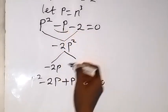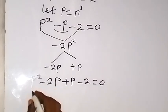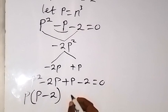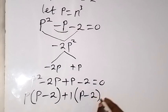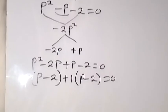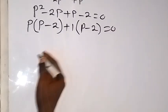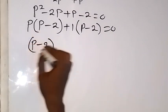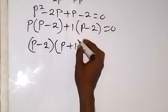We replace the middle number with these two — that's how to factorize. Then grouping into two parts and factoring out what is common: from the first group p is common, leaving p minus 2 inside. From the second group, 1 is common, giving plus 1 times bracket p minus 2. So we have p minus 2 multiplied by p plus 1, which equals 0.